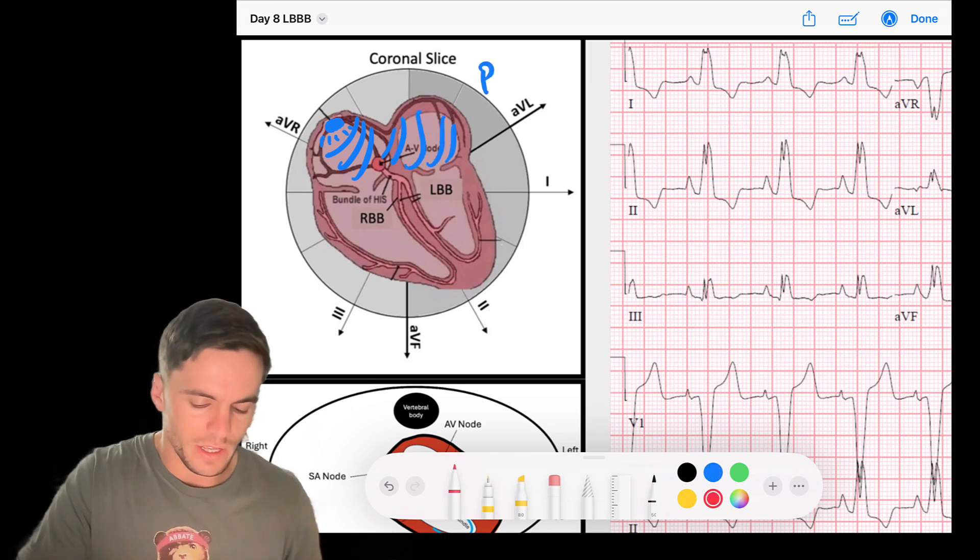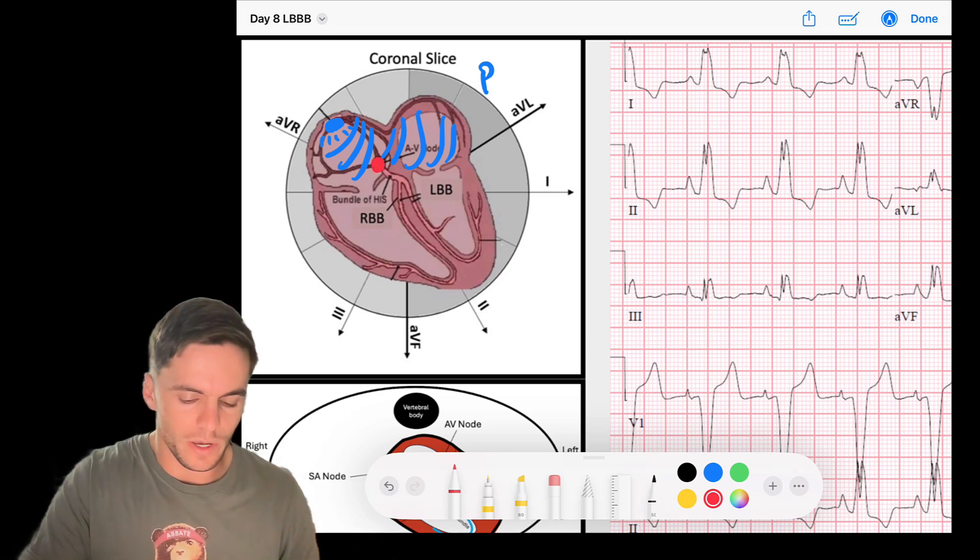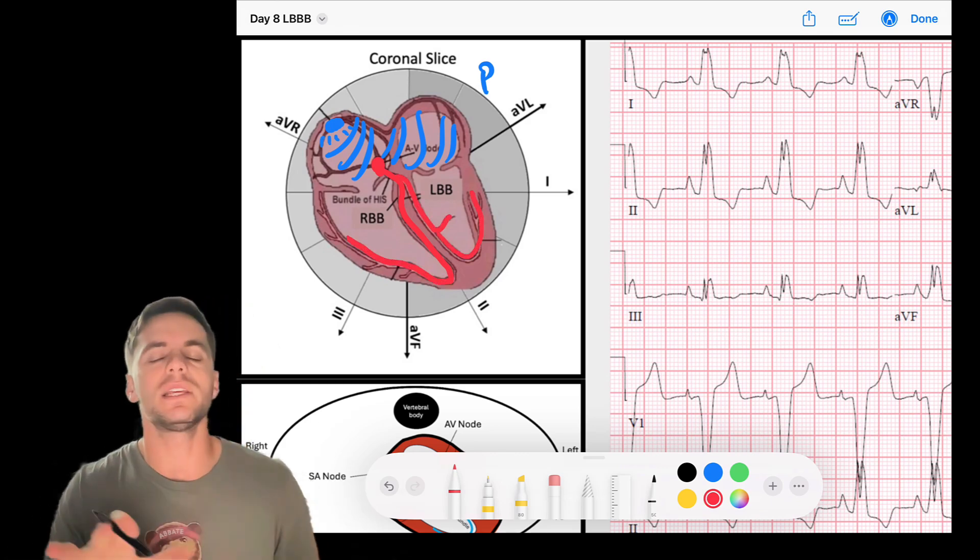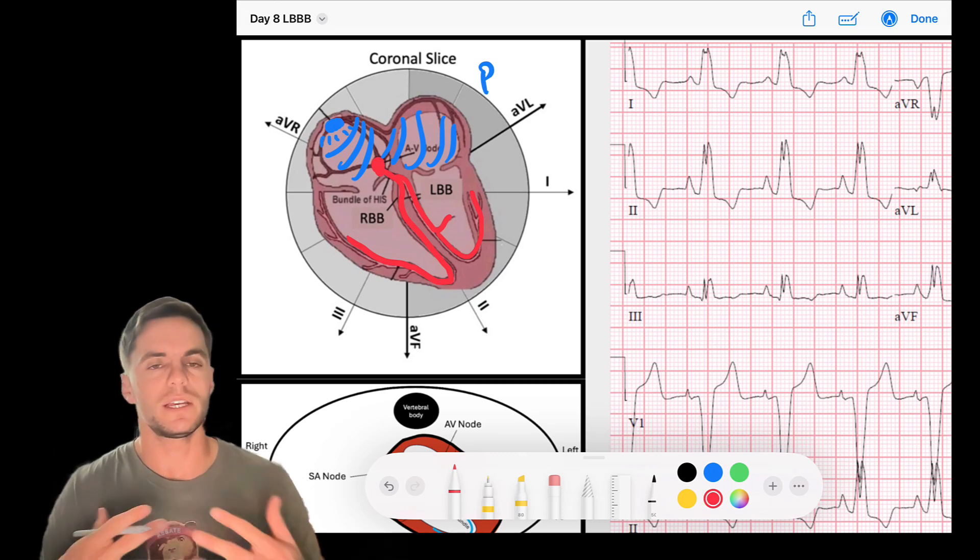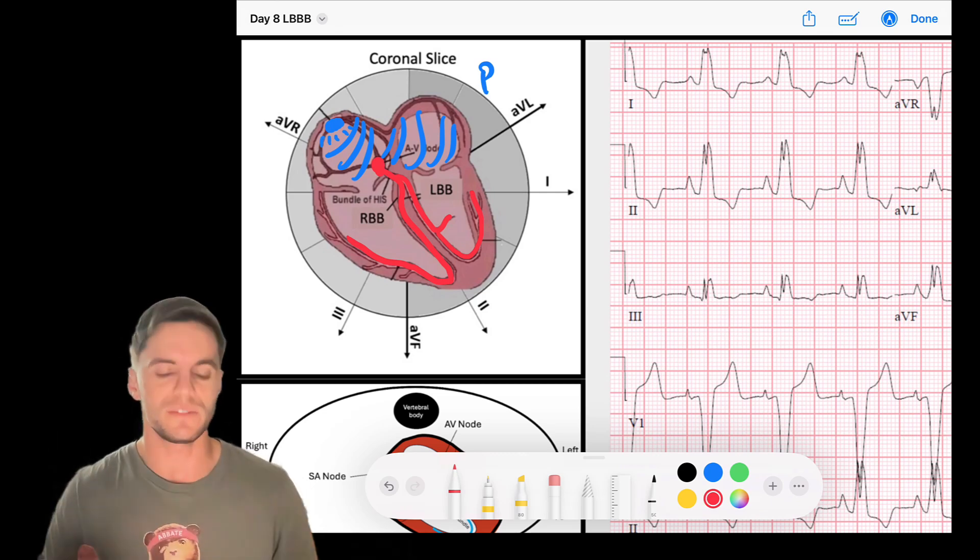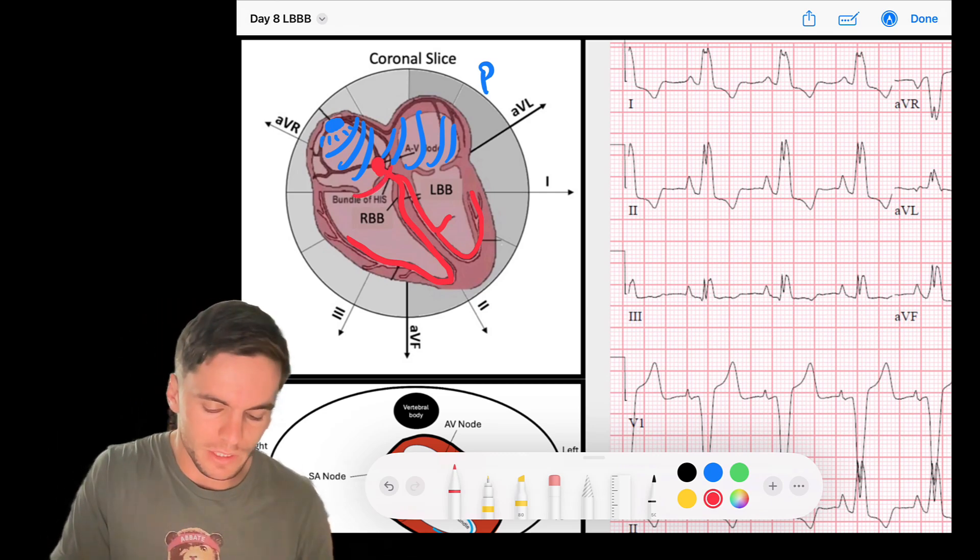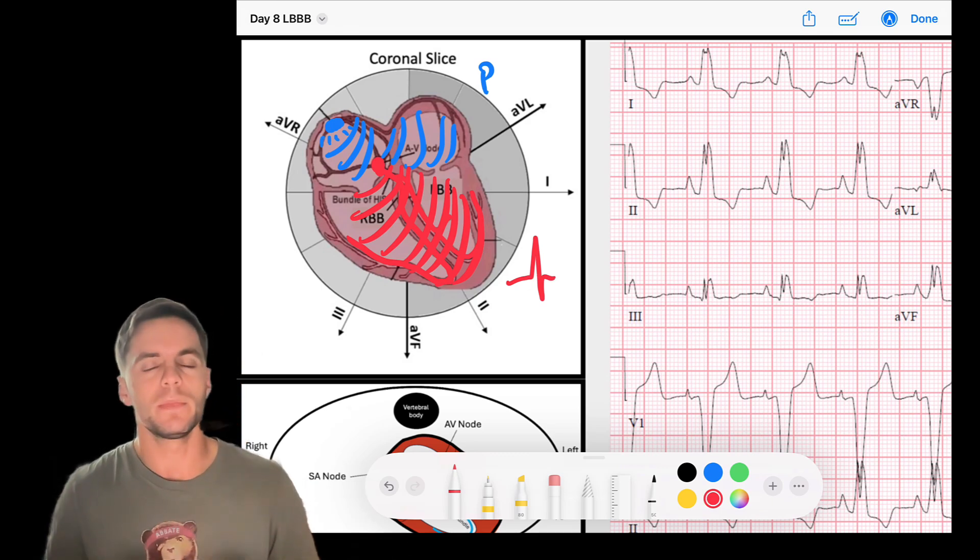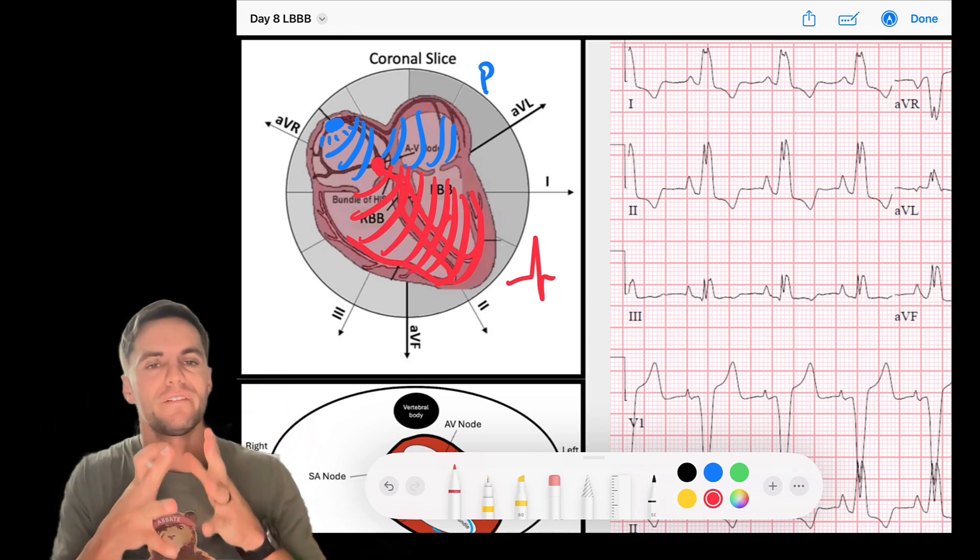We then know that when that sinus P wave gets transmitted via the AV node down to the ventricles, it does so via this His-Purkinje system. And that is a rapidly conducting system, the His bundle and Purkinje fibers. That rapidly conducting system allows for a narrow complex QRS. It allows for our QRS to be narrow because remember that narrow means fast.